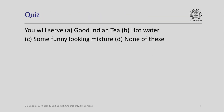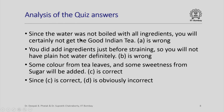Here is a quiz. If you follow the procedure that was outlined in the last slide, you will serve: A — good Indian tea, B — hot water, C — some funny looking mixture, or D — none of these. Let us analyze this quiz. Since the water was not boiled with all the ingredients, we will certainly not get good Indian tea. Therefore, A is wrong.